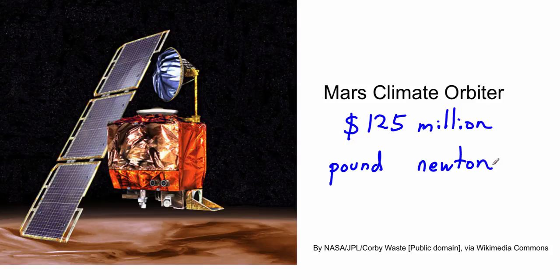And so the orbiter ended up going much too fast in the atmosphere of Mars, much too low as well. And so it basically burned up inside the Martian atmosphere, and the whole mission was lost, costing years and years of work and a lot of money. So, the first thing to remember is that if we write down a number that has units without units, it's wrong.